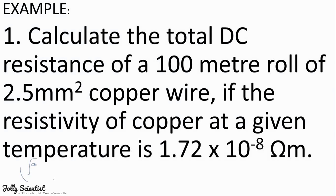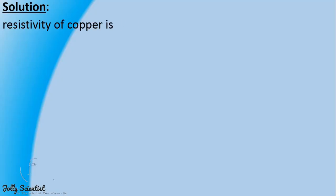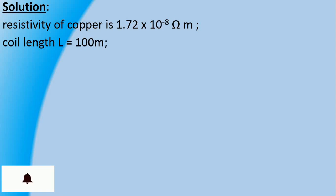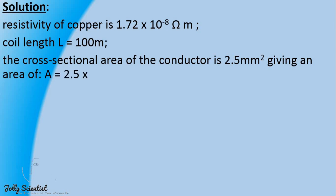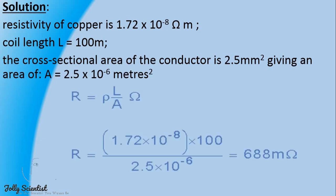Calculate the total DC resistance of a 100-meter roll of 2.5 mm squared copper wire, if the resistivity of copper at a given temperature is 1.72 × 10⁻⁸ ohm-meters. Solution: The resistivity of copper is 1.72 × 10⁻⁸ ohm-meters, the coil length is 100 meters, and the cross-sectional area is 2.5 square millimeters, which implies A equals 2.5 × 10⁻⁶ square meters. Using our formula, we rearrange it to find R: R equals rho times L over A.